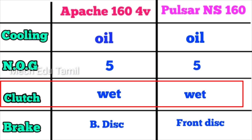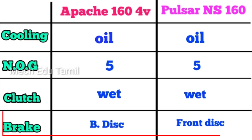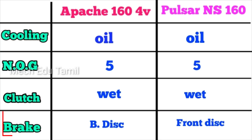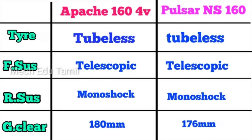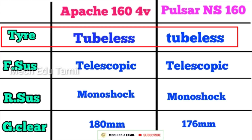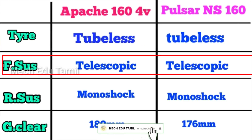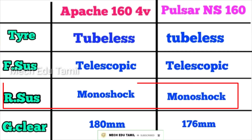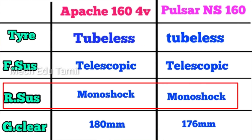The Apache comes in two brake variants: front disc with rear drum, and both disc brakes. The NS160 also has a front disc rear drum brake option, with a rear disc brake available. Both bikes use tubeless tires. The front suspension is telescopic and the rear suspension is monoshock on both bikes.